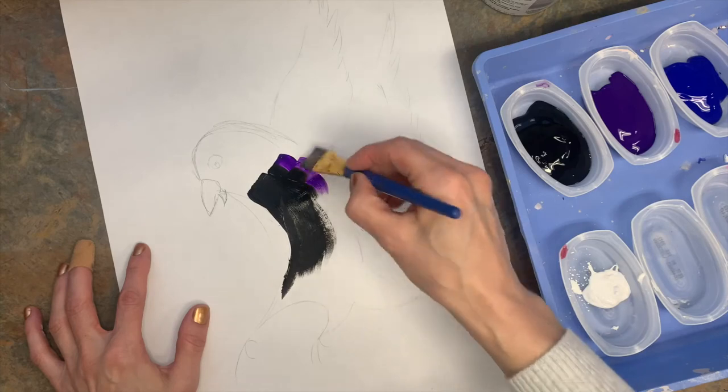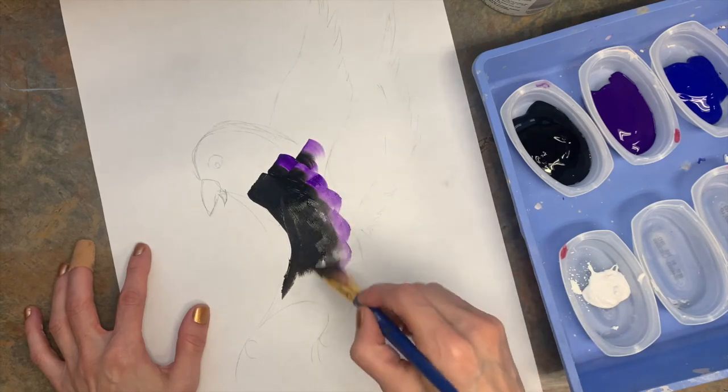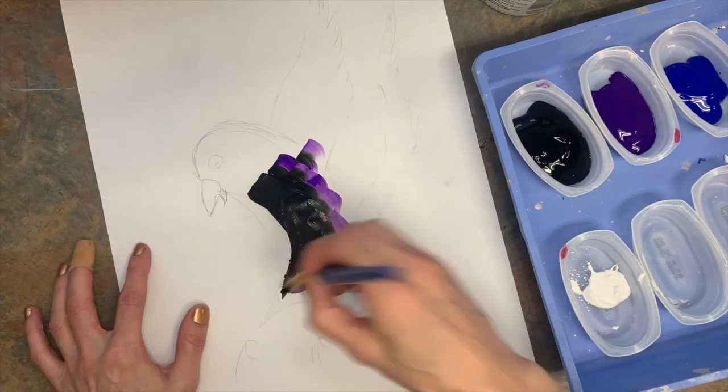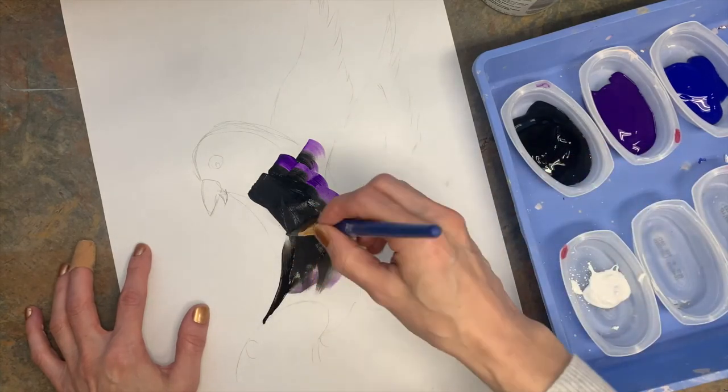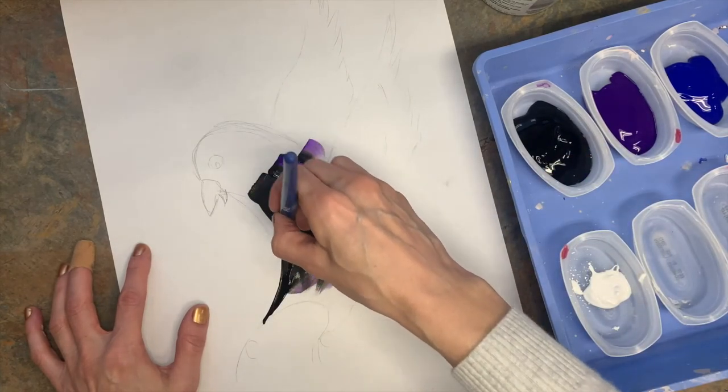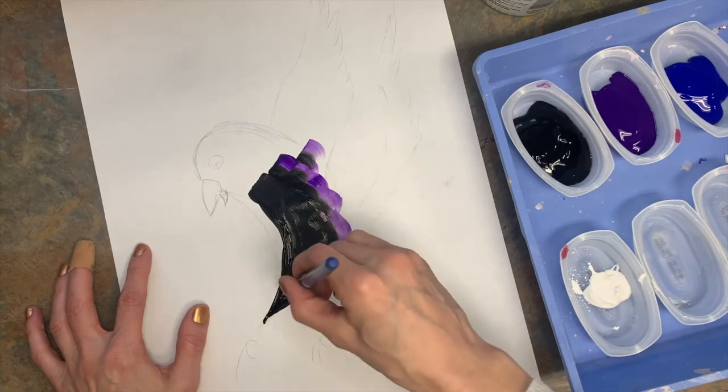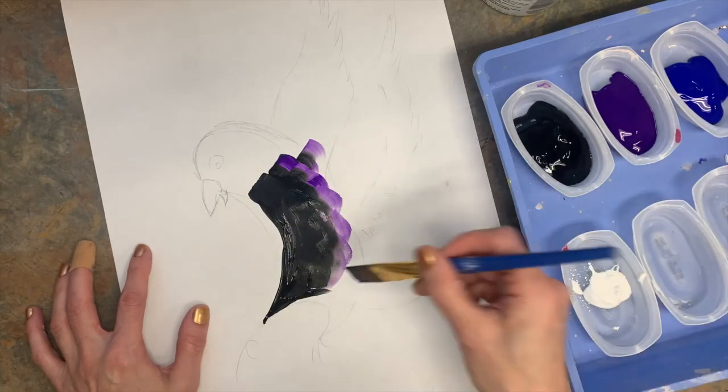Because, you know, sometimes black can have some purple or blue type shadows in it or highlights. Fun fact about impressionist artists, they didn't actually use black. They would use a lot of other colors to mix black. But since we are beginners, we're going to go ahead and use black.